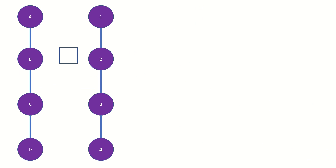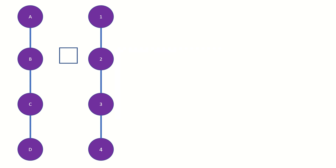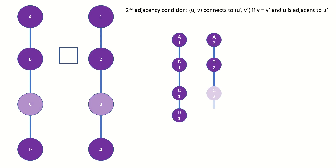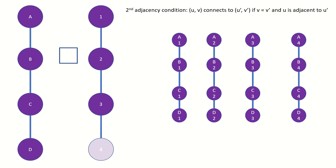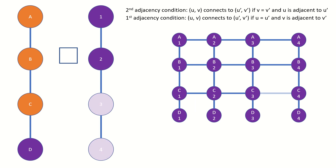Another example of this behavior: the Cartesian product of two path graphs is a grid graph. Say we have two path graphs of length 4 — we copy the path graph four times according to the second adjacency rule, then link each copy together according to the first adjacency rule. That is the intuition behind the Cartesian product: copying the left graph through the second adjacency rule and then linking those copies together through the first adjacency rule.